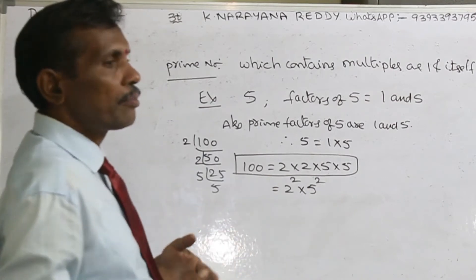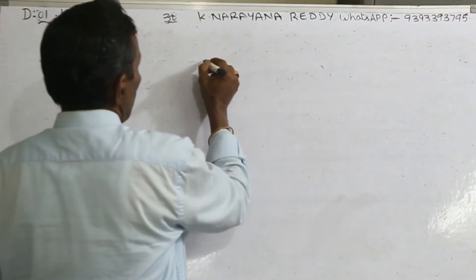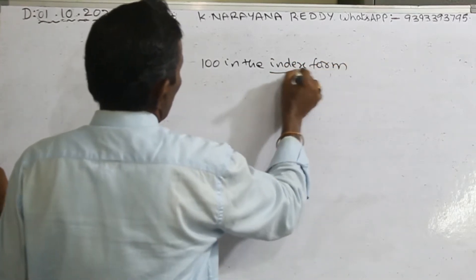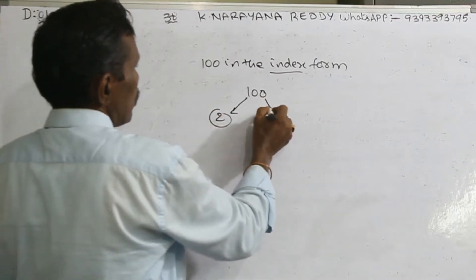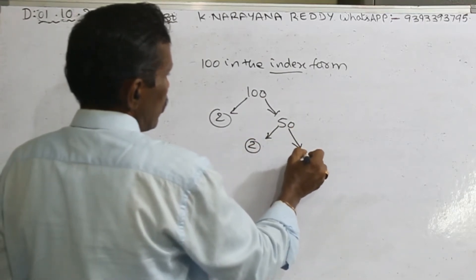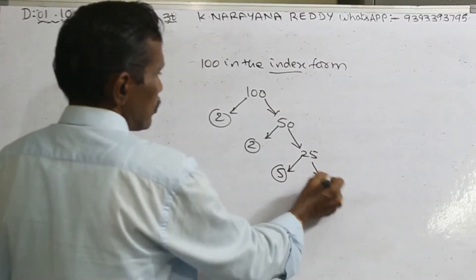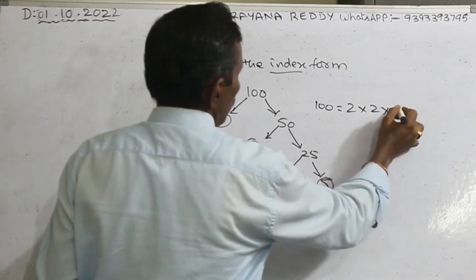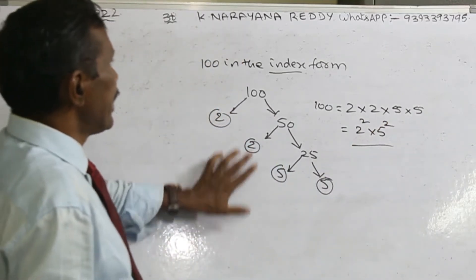What is index form? Index form is nothing but we can show it in tree format. For example, take 100 in the tree format. 100 can be divided by 2 to get 50. Again 50 can be divided by 2 to get 25. Again 25 can be divided by 5 to get 5. So 100 equals 2 times 2 times 5 times 5, which is 2 squared times 5 squared. This is called the index form.